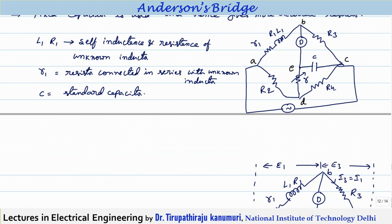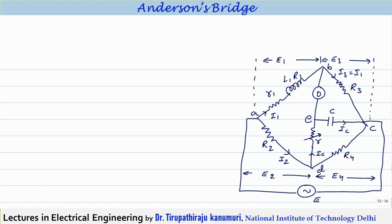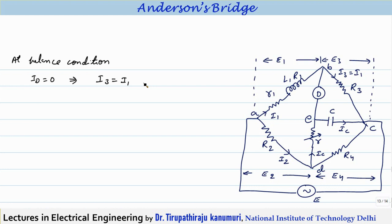We will first derive the balance equation, then see the phasor diagram. At balanced condition, the current passing through the detector is equal to zero. From this, the value of I3 equals I1. For I2, after reaching junction D it divides into two currents: one passing through the capacitor (IC) and one represented as I4.